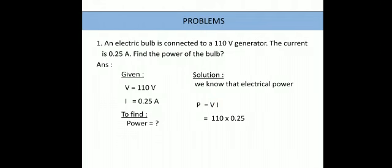So power is equals to V into I. Step number 1. Step 2, do the substitution. Potential difference is 110 and the current is 0.25 amperes. So that becomes 27.5 watt. So like this, we can solve many problems related to this.